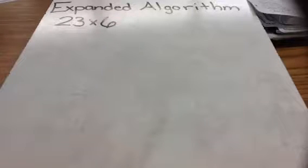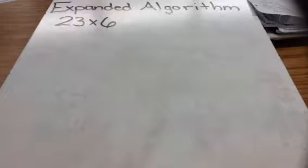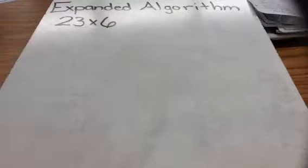Today, I'm going to talk about how to use the expanded algorithm to multiply a two-digit number times a one-digit number, and how to use it to multiply a three-digit number by a one-digit number. An algorithm is simply steps to find the answer to a problem. So, if you're using the expanded algorithm, then you're taking what you know about expanded form of a number and following steps to solve a multiplication problem.